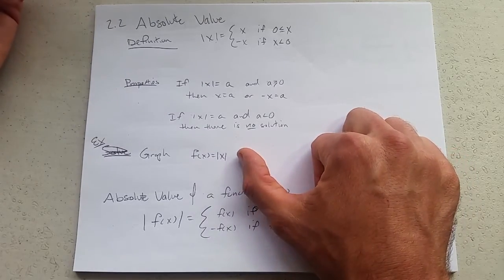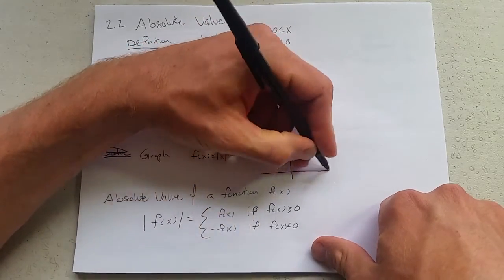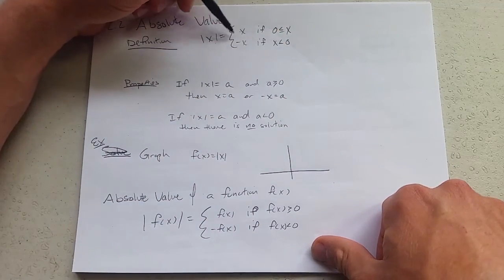Now we're going to do an easy graph here. Graph f of x equals absolute value of x. What does that look like? It looks just like a step function right here.